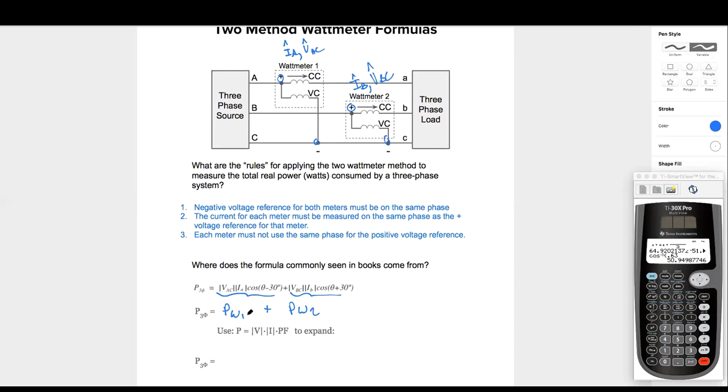So let's figure out how to use the correct subscripts that they did. Wattmeter one is measuring what voltage we set. VAC, right? So we're going to use VAC. Now what current magnitude IA, right? So times current magnitude IA times power factor. Remember, power factor equals what? Cosine.